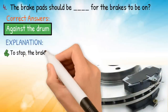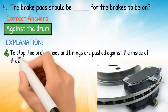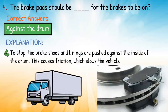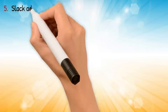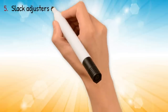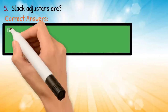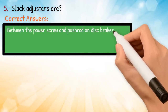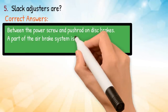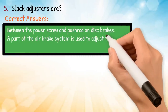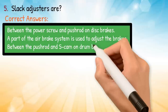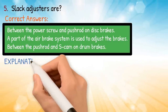To stop, the brake shoes and linings are pushed against the inside of the drum. This causes friction, which slows the vehicle. Question five: slack adjusters are — correct answer: between the power screw and push rod on disc brakes; a part of the air brake system used to adjust the brakes; between the push rod and S-cam on drum brakes.